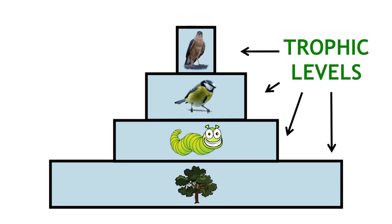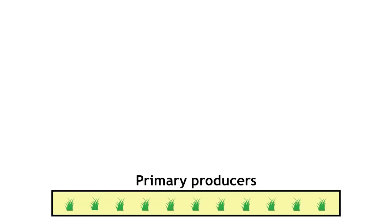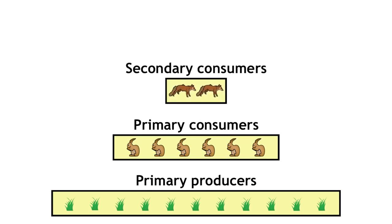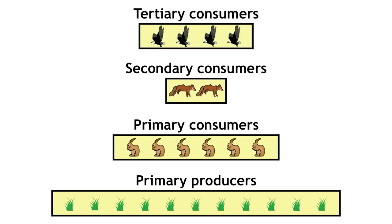So how does that work? The bottom of the pyramid represents the primary producers, the first trophic level. On top of that go the primary consumers, the second trophic level, and so on up through the secondary consumers, tertiary consumers, until you reach the highest trophic level in that ecosystem.